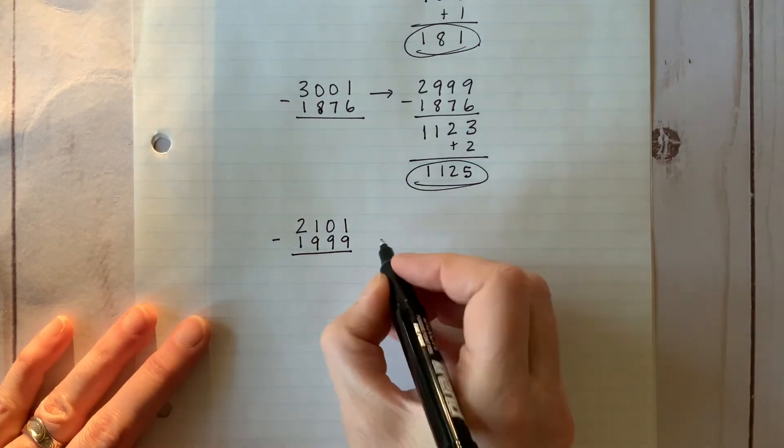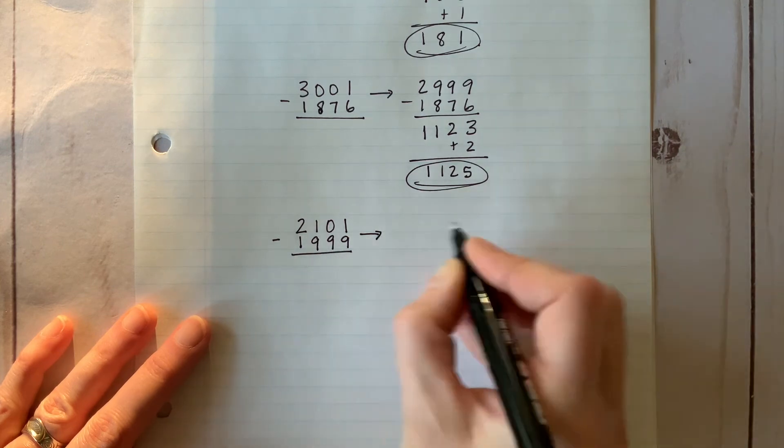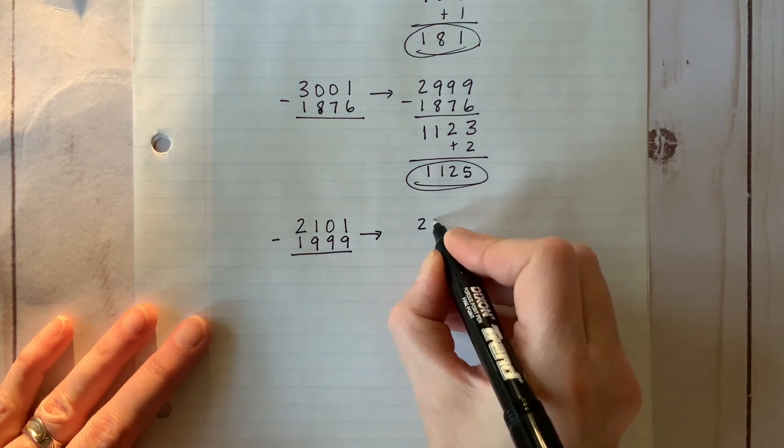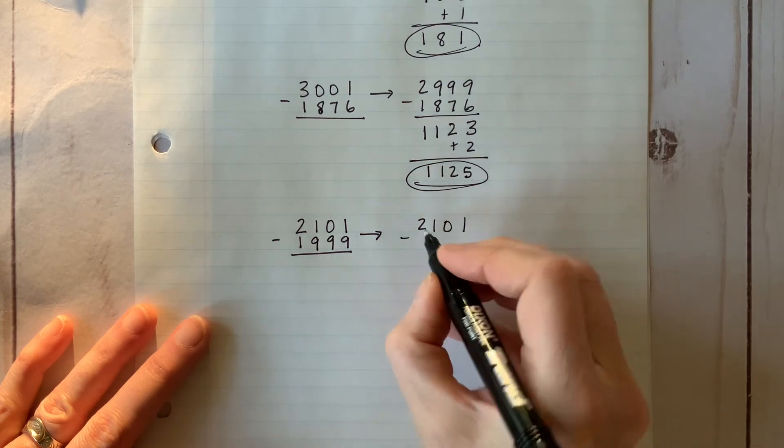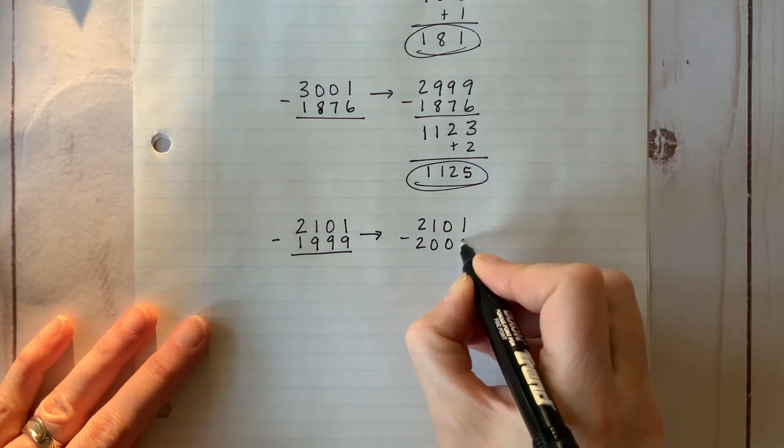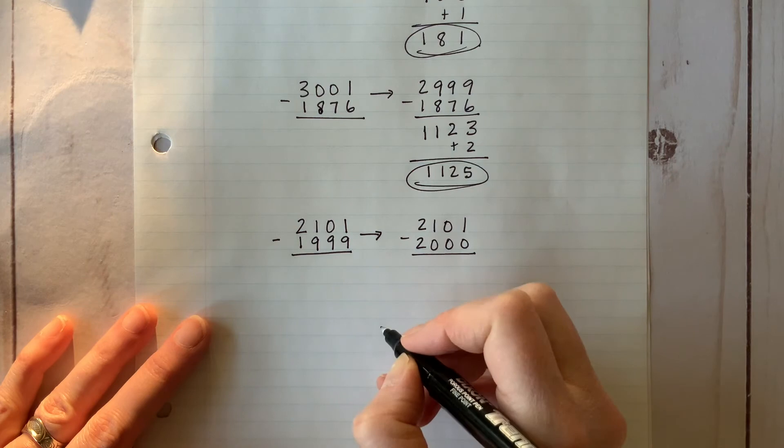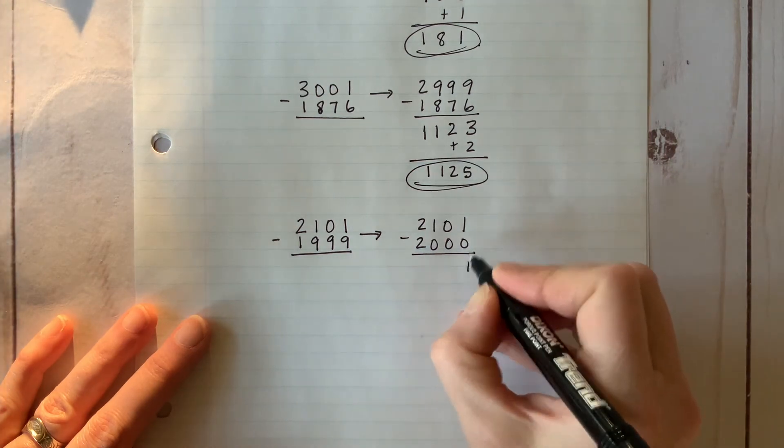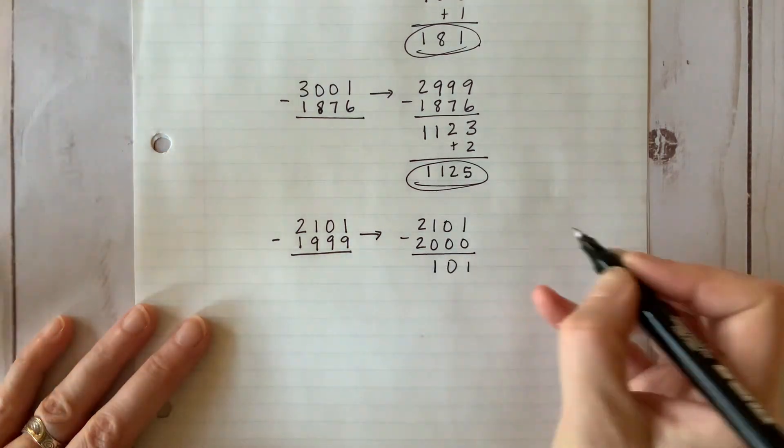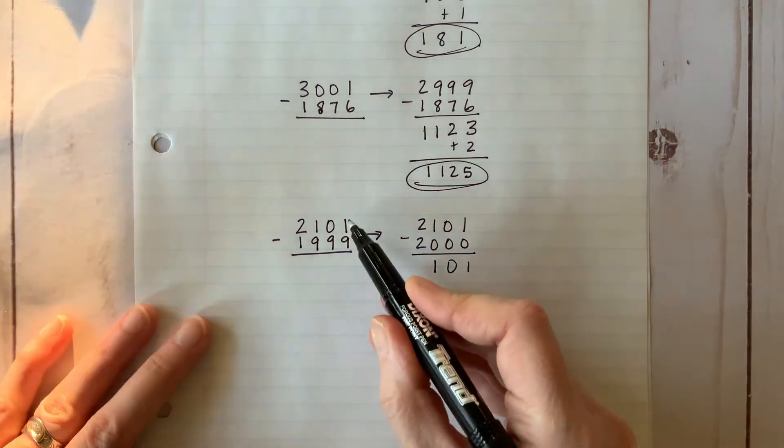The compensation method also works in situations like this. This time we change the bottom number to make it a lot easier to subtract.